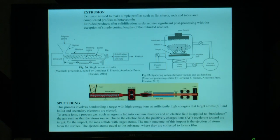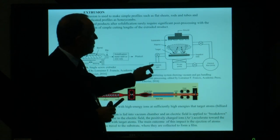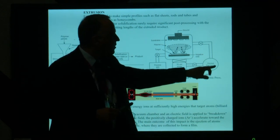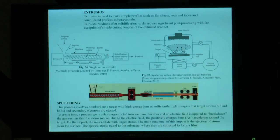The sputtering system shows vacuum and gas handling: the target, plasma ions, the substrate, the negative electrode, and the process gas. The process involves bombarding a target with high-energy ions; a process gas such as argon is fed into the vacuum chamber, an electric field is applied to ionize the gas, and the ejected atoms travel to the substrate where they are collected to form a film.